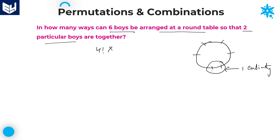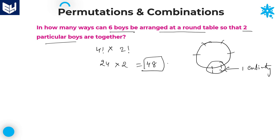The answer is not yet complete. Within the single entity, the 2 boys — boy 1 and boy 2 — can be arranged in 2 factorial ways. Therefore, the required answer is 4 factorial × 2 factorial. 4 factorial = 24 and 2 factorial = 2. Therefore, the required answer is 48.